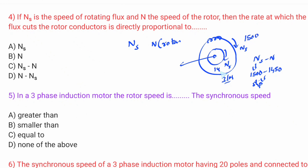The rate at which the flux cuts the rotor conductors — when the relative speed is zero, the flux cutting is zero, so the answer is zero.